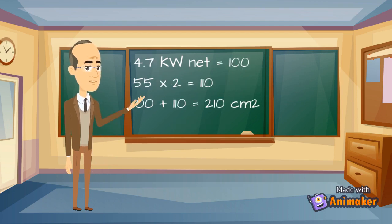If our room was big enough to allow the installation of a 4.7 kilowatt net appliance, the calculation would be 100 centimeters squared to start with, as this is always applied no matter what kilowatt net the appliance is.